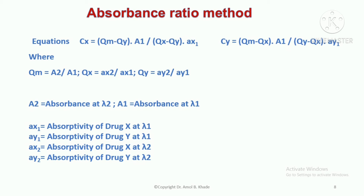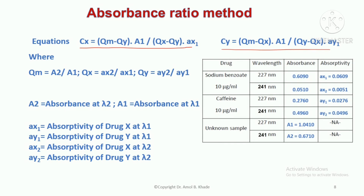In the absorbance ratio method, similar to the simultaneous equation method, we use a mathematical equation to find the concentration of drug X and drug Y. This method is used for analysis of binary samples. One important thing to keep in mind is that one of the wavelengths for recording must be the lambda max of one of the drugs. For example, drug X is sodium benzoate and drug Y is caffeine. You can select the lambda max of either sodium benzoate or caffeine — here we have taken the lambda max of sodium benzoate, which is 227 nm, referred to as lambda 1.